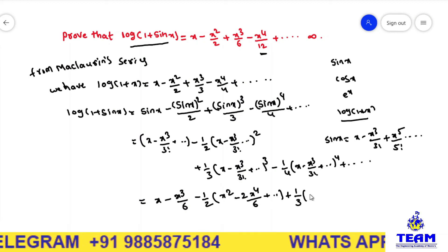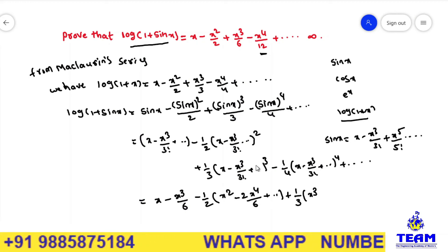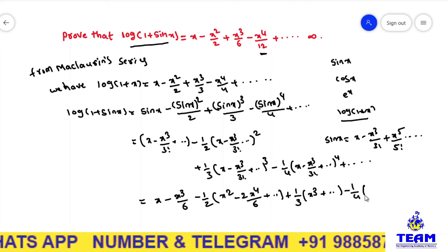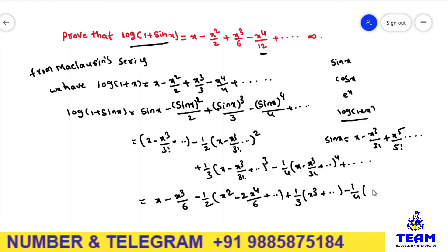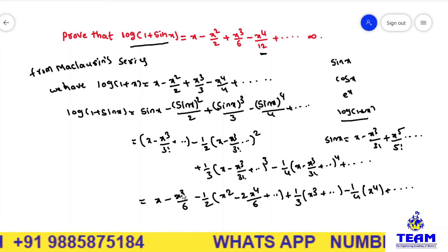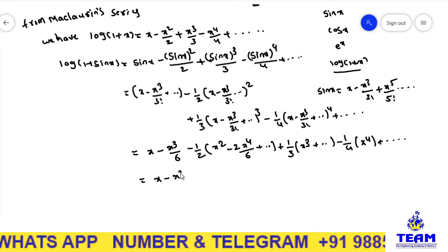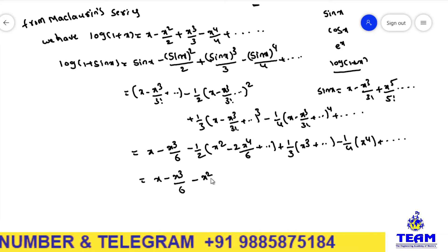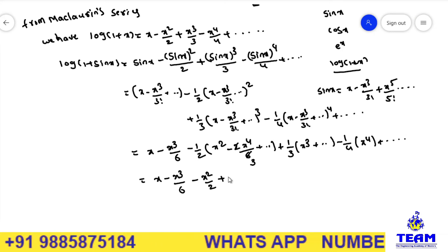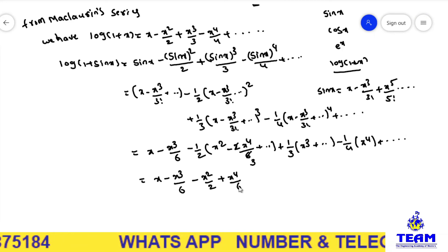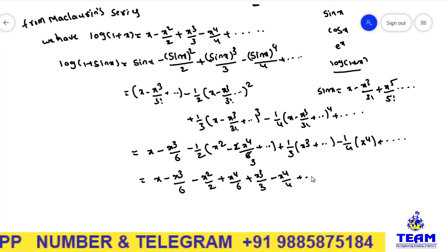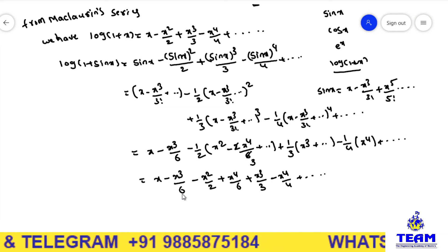For the 1 by 3 term, using (a minus b) cubed: the a cubed term gives x cubed, but since we only want up to x to the power of 4, we take x cubed only. For the minus 1 by 4 term, we take only x to the power of 4. Simplifying, we collect: x minus x cubed by 6 minus x squared by 2, plus x to the power of 4 by 6, plus x cubed by 3, minus x to the power of 4 by 4, plus so on.